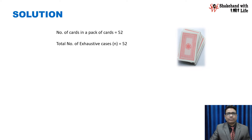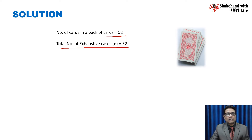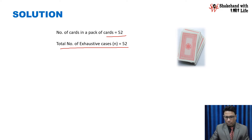We have 52 cards in the pack of cards. Therefore, the total number of exhaustive cases we have is 52. The total number of cards in the pack is 52, therefore the exhaustive cases N equals 52.